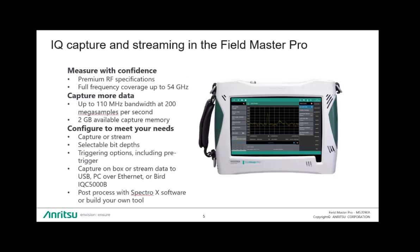So the Fieldmaster Pro itself is a valuable tool in any sort of IQ application. The things we want you to take away is that you can measure with confidence. This is a premium handheld analyzer with premium RF specifications, the best RF specifications of any handheld analyzer on the market, full frequency coverage up to 54 gigahertz, so any signals that you're trying to analyze up to that range, we can do that. We offer more capture data, so with the 2 gigabytes of RAM, the 110 megahertz bandwidth, you can get more data for your applications, and then it's configurable for your needs. We've offered all the different options for capturing.